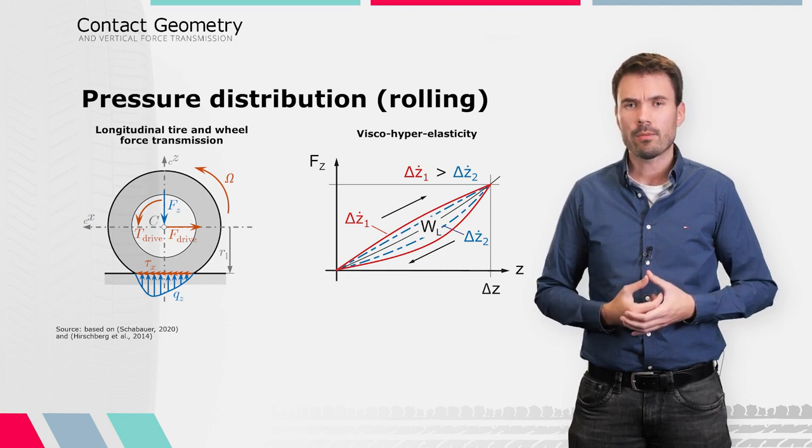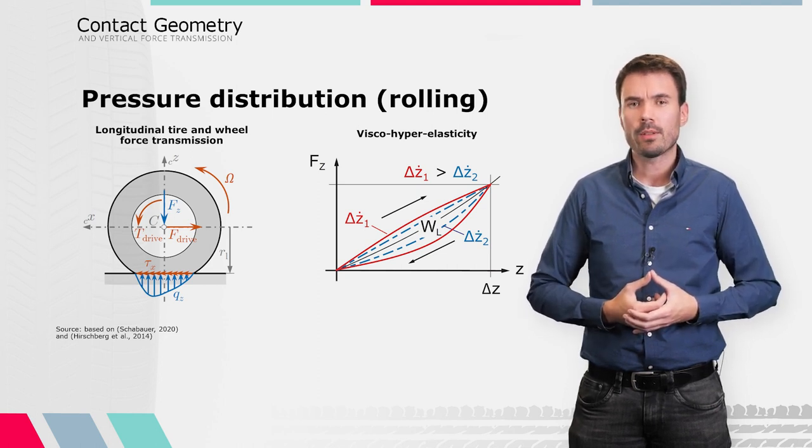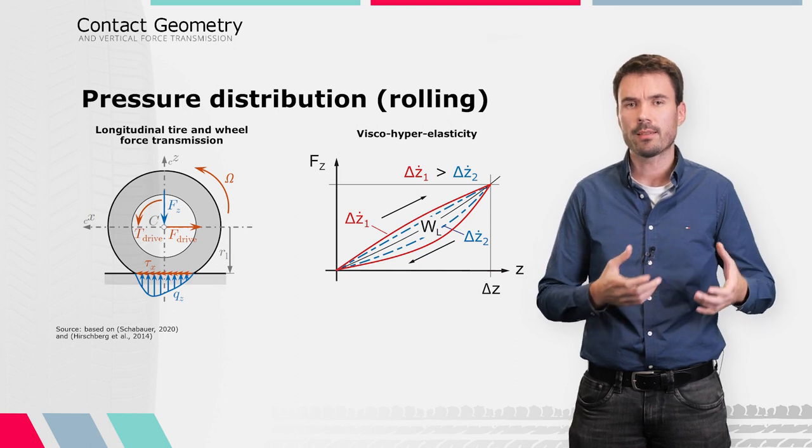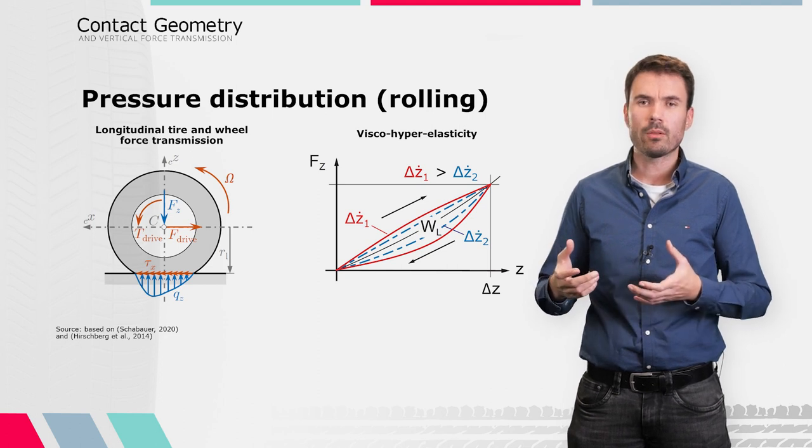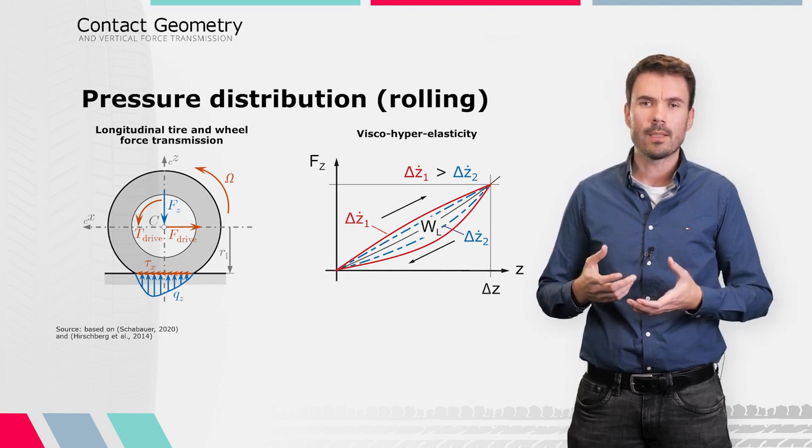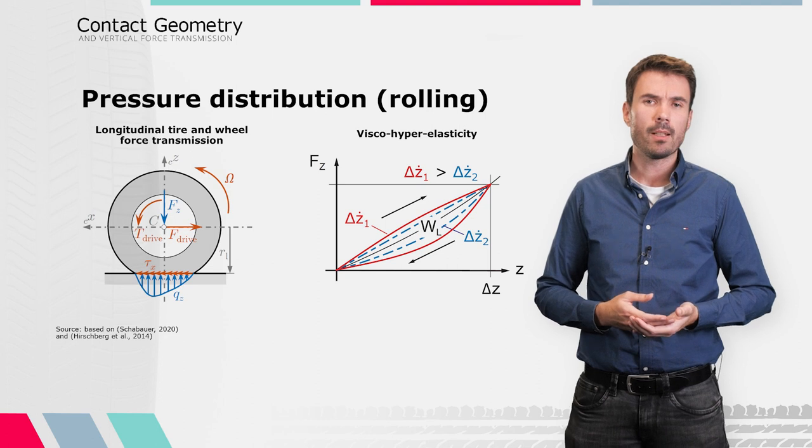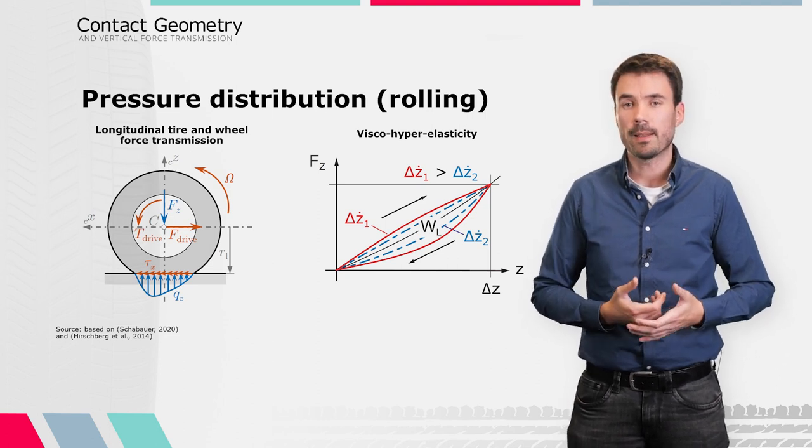Now this asymmetric shape of the pressure distribution is based on effects due to viscoelastic properties of the tire. When an element of the tire structure enters the contact area with the road, it is loaded and compressed. When leaving the contact area, it is unloaded again.